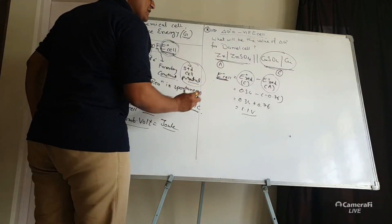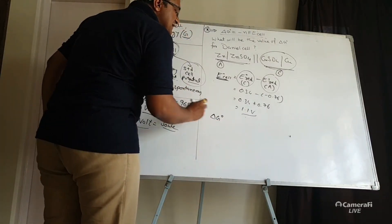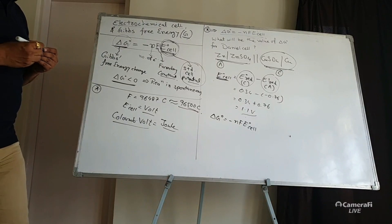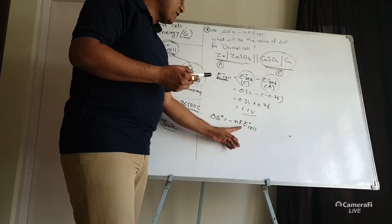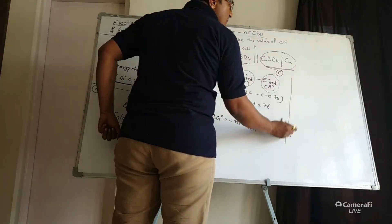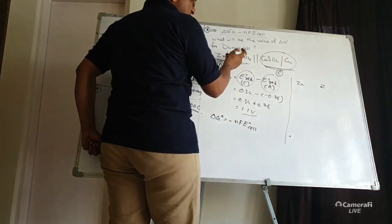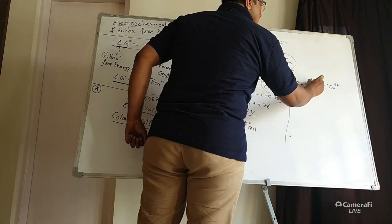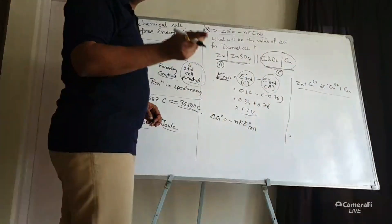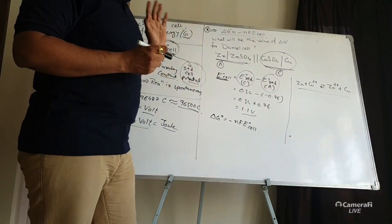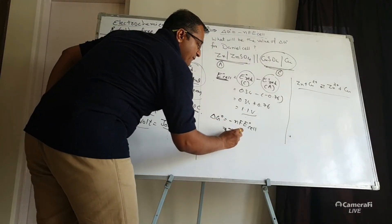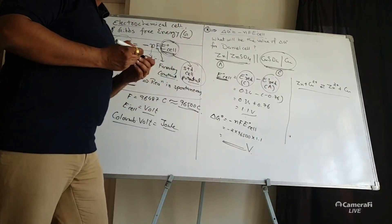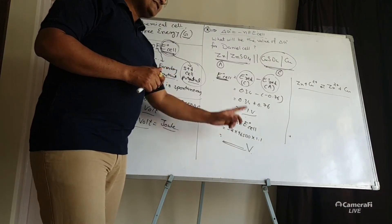We can calculate ΔG⁰ for the Daniel cell using ΔG⁰ = −NFE⁰cell. N = 2 because Zn undergoes oxidation (Zn → Zn²⁺) and Cu²⁺ is reduced (Cu²⁺ → Cu), transferring 2 moles of electrons. F = 96500, E⁰cell = 1.1V. Write the answer of this multiplication in the comment section.